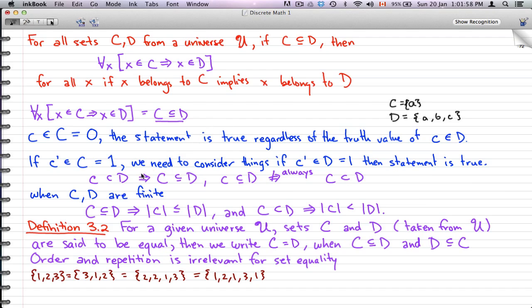When C and D are finite and C is a subset of D, that will imply that the cardinality of C is less than or equal to the cardinality of D. And when C is a proper subset of D, then the cardinality of C is always less than the cardinality of D. These are just rules that you should remember.